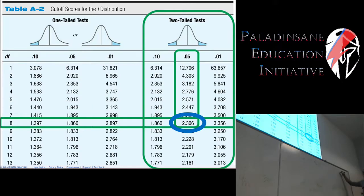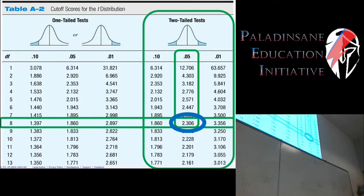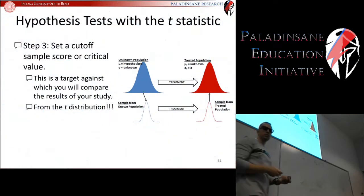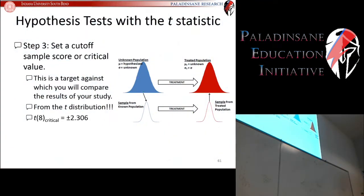So our cutoff scores are +2.306 and -2.306 — those are our lines in the sand. When you report a t-statistic and t-cutoff scores, you must report the degrees of freedom, which is why we report t(8). We have a two-tailed test, so we have both +2.306 and -2.306. The basic idea is the same as before — we needed cutoff scores, and this is the new table we flip to.